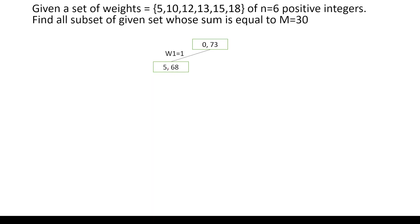Now did we meet the objective? Our objective is to find a subset where the weight is 30. After adding one element we got weight as 5, so we can add more elements. Let us add the second element — w2 equal to 1, meaning add that weight to the subset.